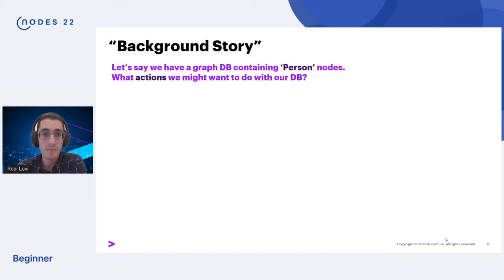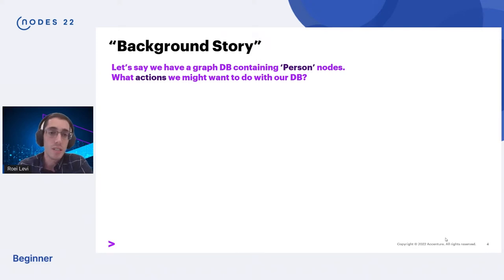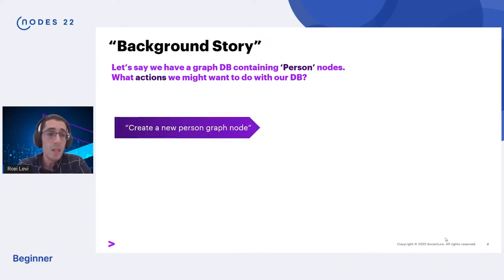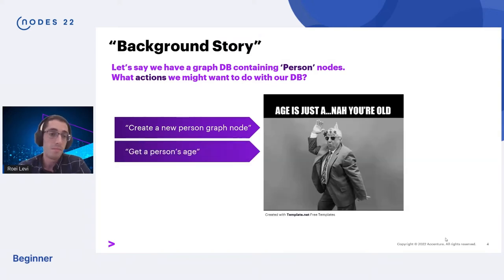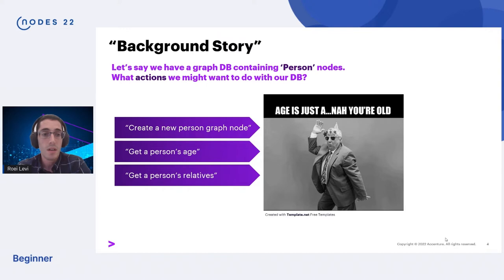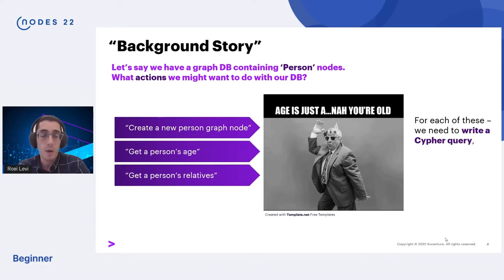The background story is very simple. Let's say we have a graph database containing person nodes. We might want to create new person nodes — mutating the database — or get some properties of the people in our database, for example a person's age, or we might want to get connectivity information about the person nodes in our graph, for example a person's relatives. For each of these questions we need to write a Cypher query and embed it in our Python code.